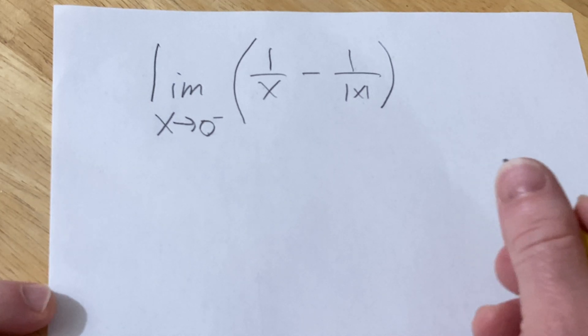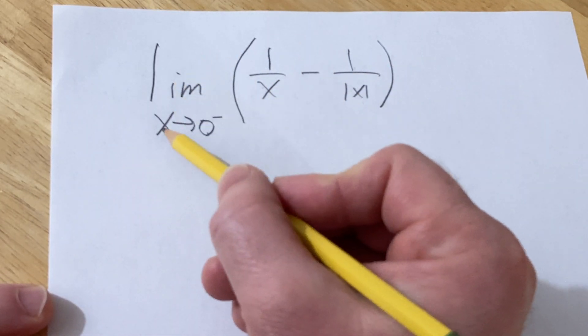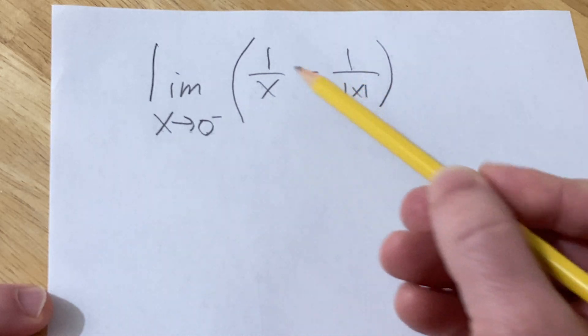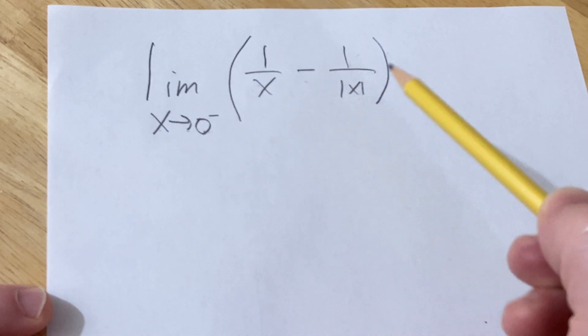Hi, in this problem we are going to find this limit. We have the limit as x approaches 0 from the left of 1 over x minus 1 over the absolute value of x.